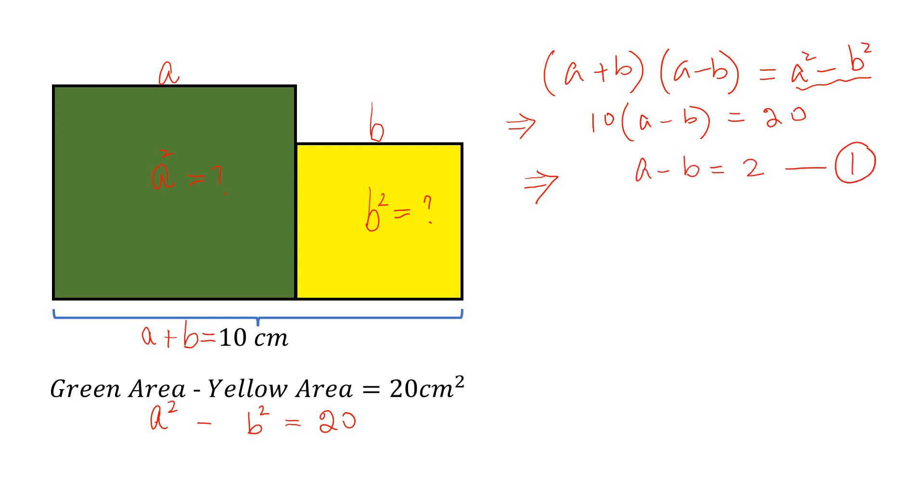Let this be equation 1 and this be equation 2. If we add equation 1 and equation 2, we have A plus B equals 10 and A minus B equals 2. Adding these, the B terms cancel and 2A equals 12, so A equals 6. If A is 6, then A² is 36.